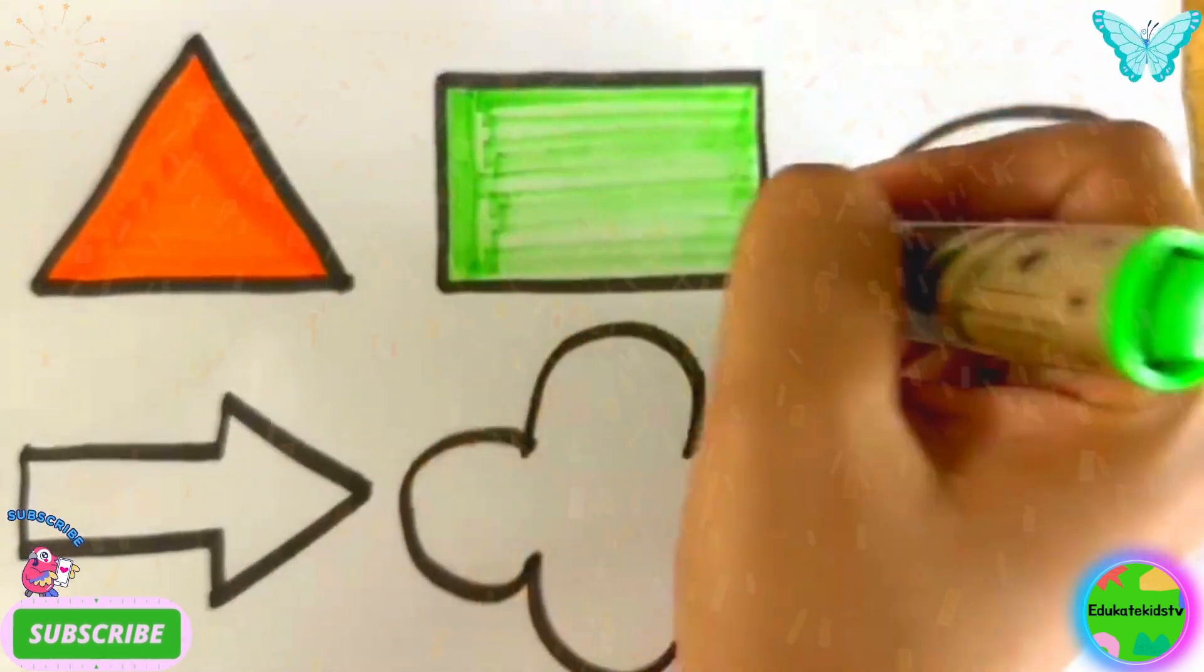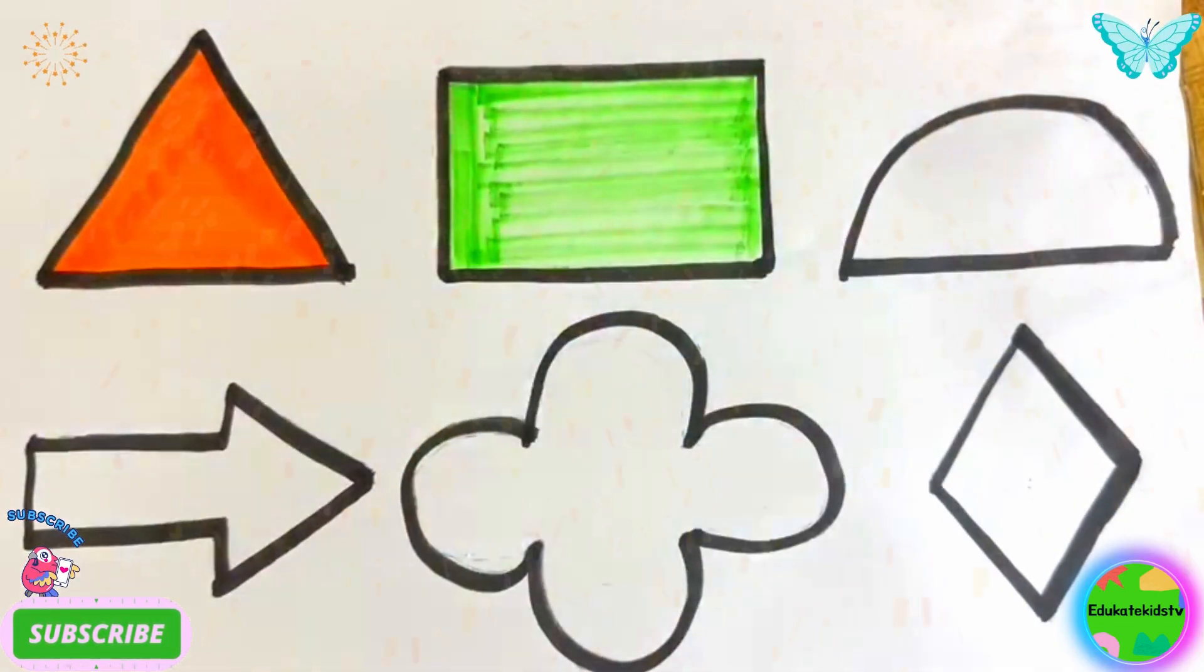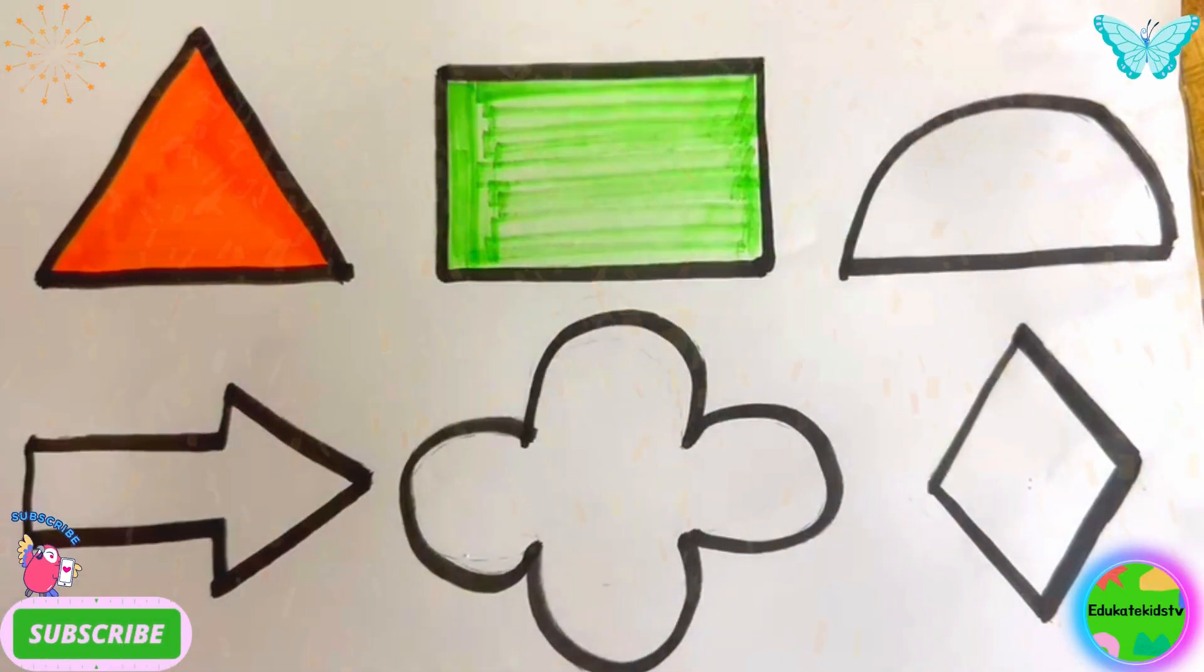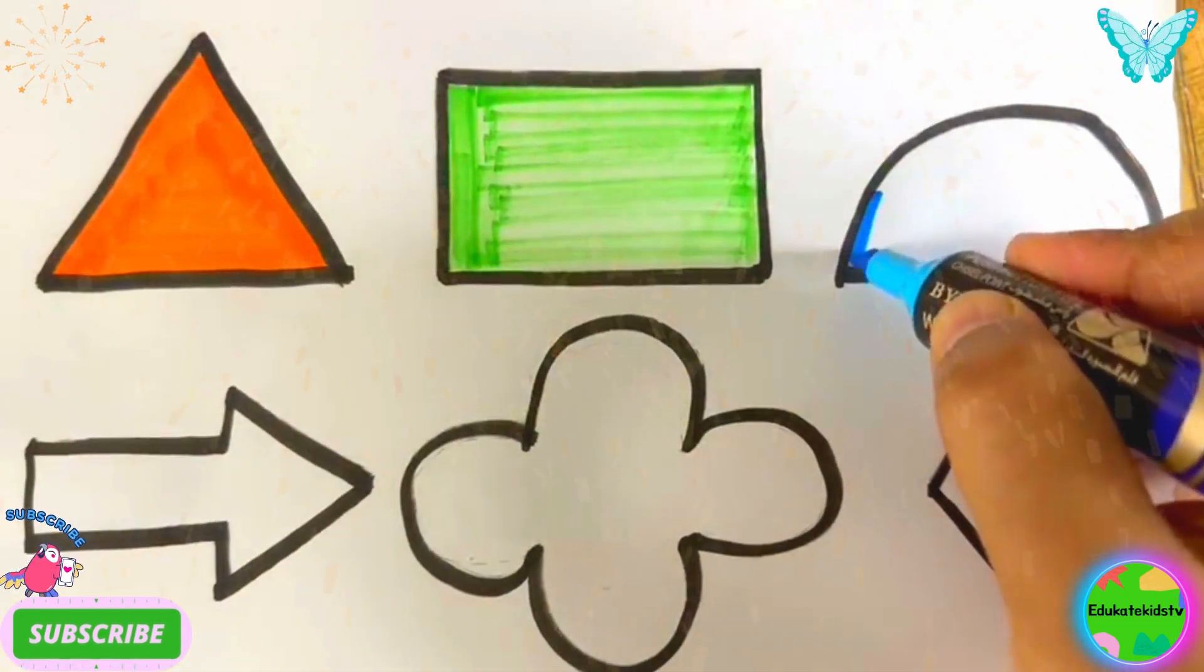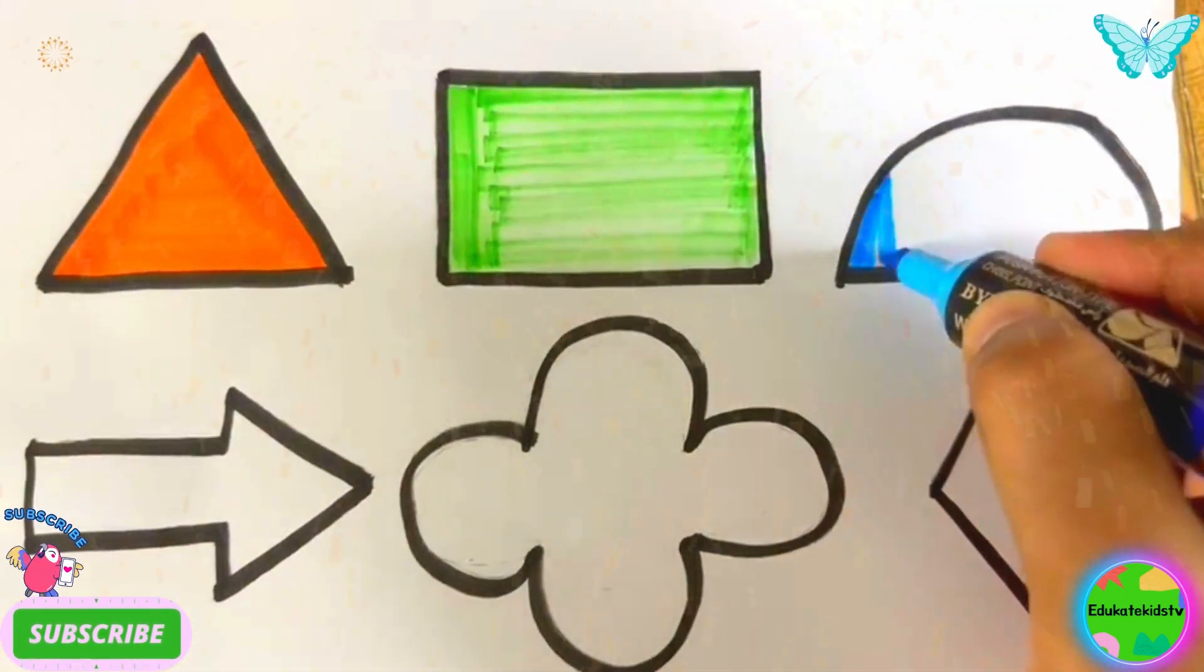Then we have blue color semicircle, blue color semicircle.